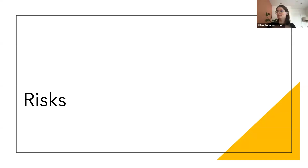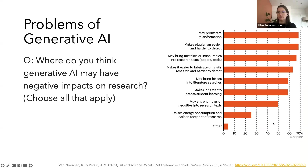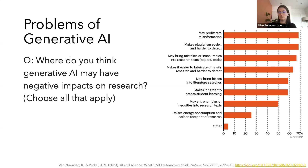As with anything where there are opportunities, there are often trade-offs of risk, and that's certainly acknowledged by the research community. In the same Nature survey from the fall, researchers were asked what negative impacts generative AI might have on research. A significant portion identified concerns like proliferating misinformation, bringing bias into literature searches or writing, and introducing inaccuracies or mistakes into research texts.